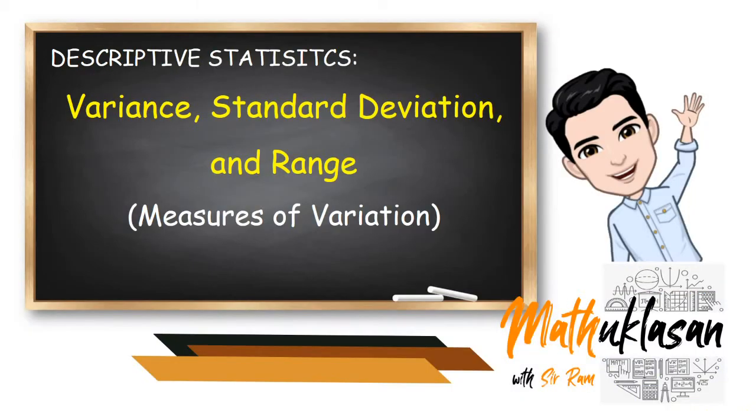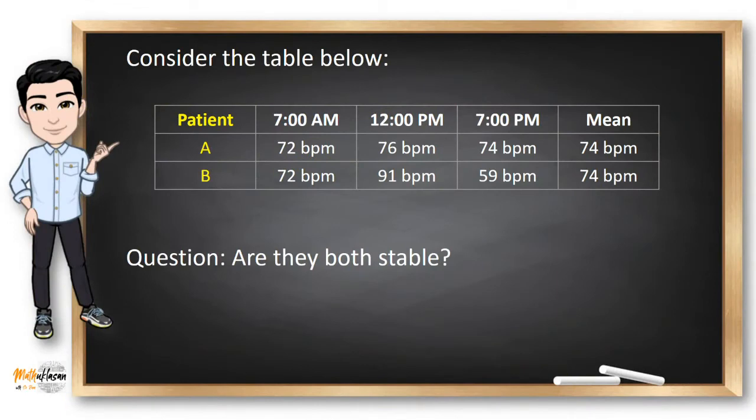Before we start our lesson, let's consider this situation. In a hospital where each patient's pulse rate is taken three times a day, patient A has 72, 76, and 74 beats per minute, while patient P has 72, 91, and 59 beats per minute. The mean pulse rate of the two patients is the same, which is 74 beats per minute.